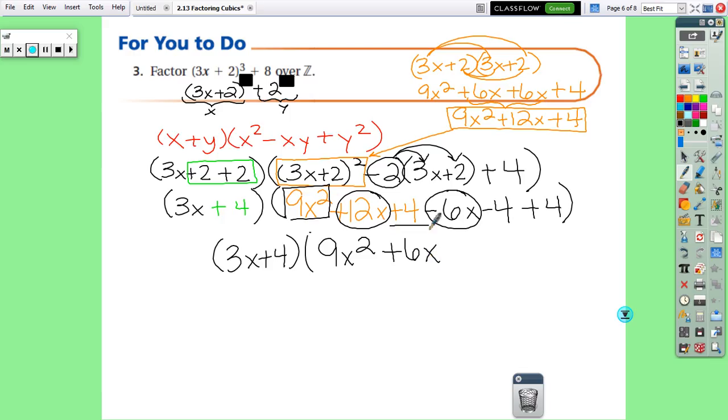And then we have a plus 4, a minus 4, and a plus 4. These two basically cancel each other out, and we just have the plus 4. And this would be the factored version. So thank you very much.